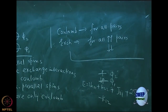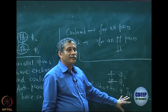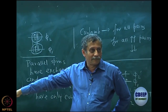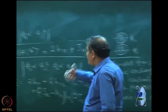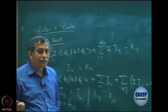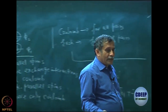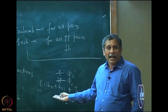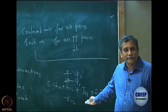Once you understand this rule, simply by inspection of the determinant you should be able to write down the energy. You do not have to go through the spin integration. I did the spin integration for closed shell, and I declare that the result in terms of Coulomb and exchange for parallel and antiparallel spin is a general result valid for every determinant.